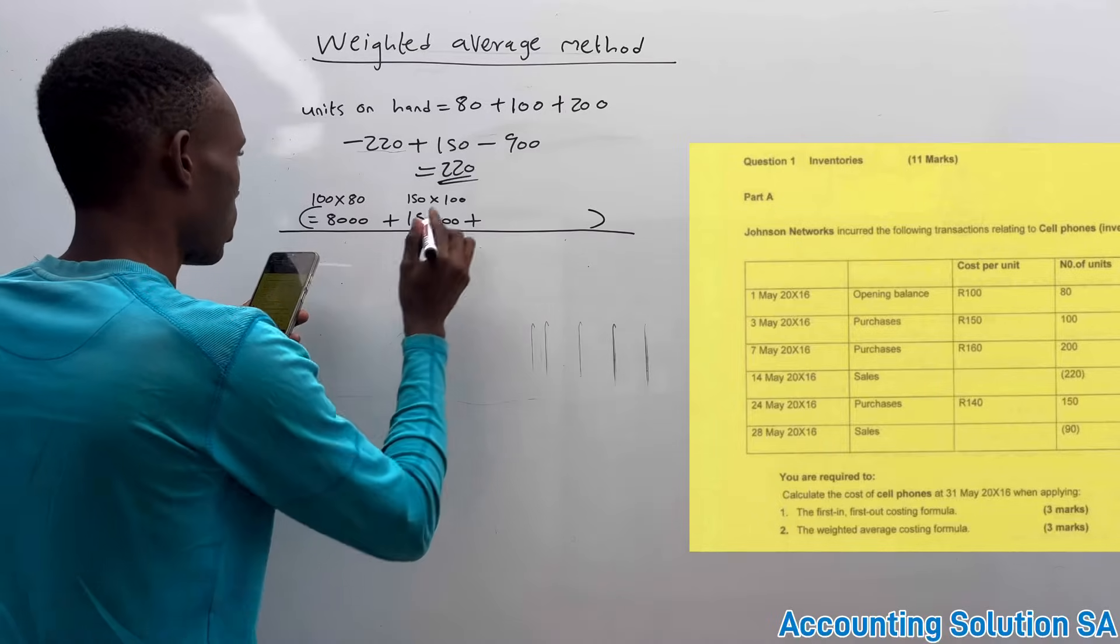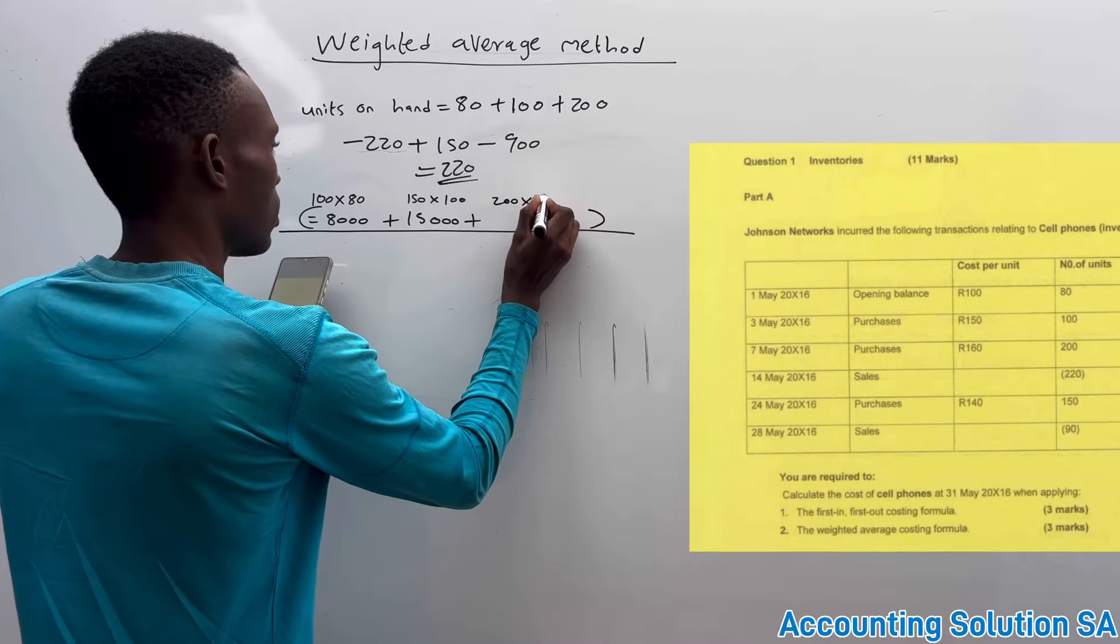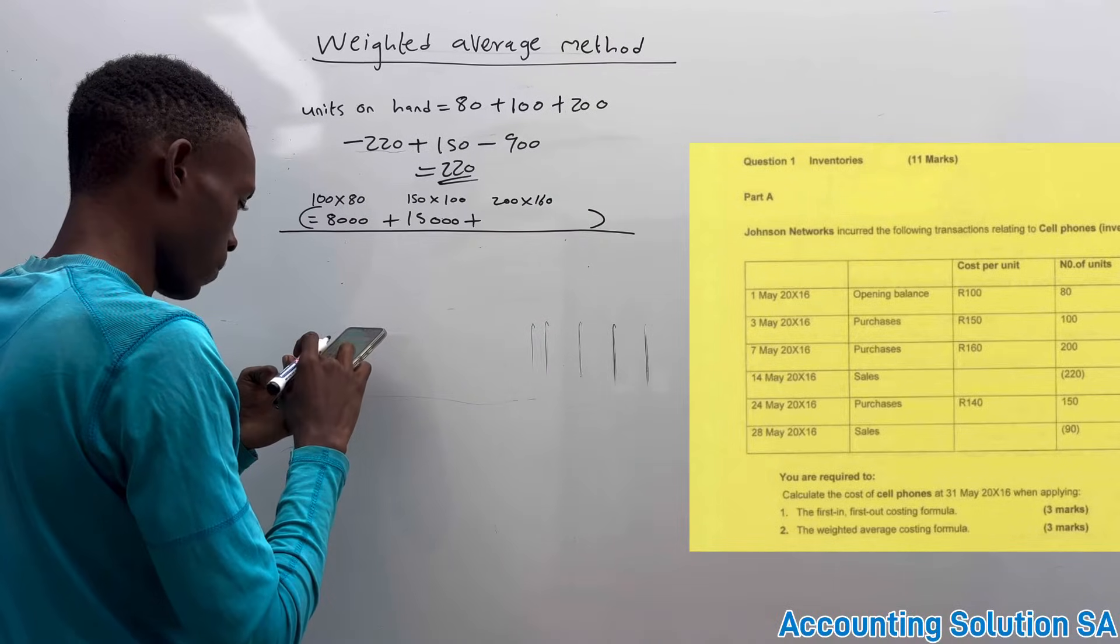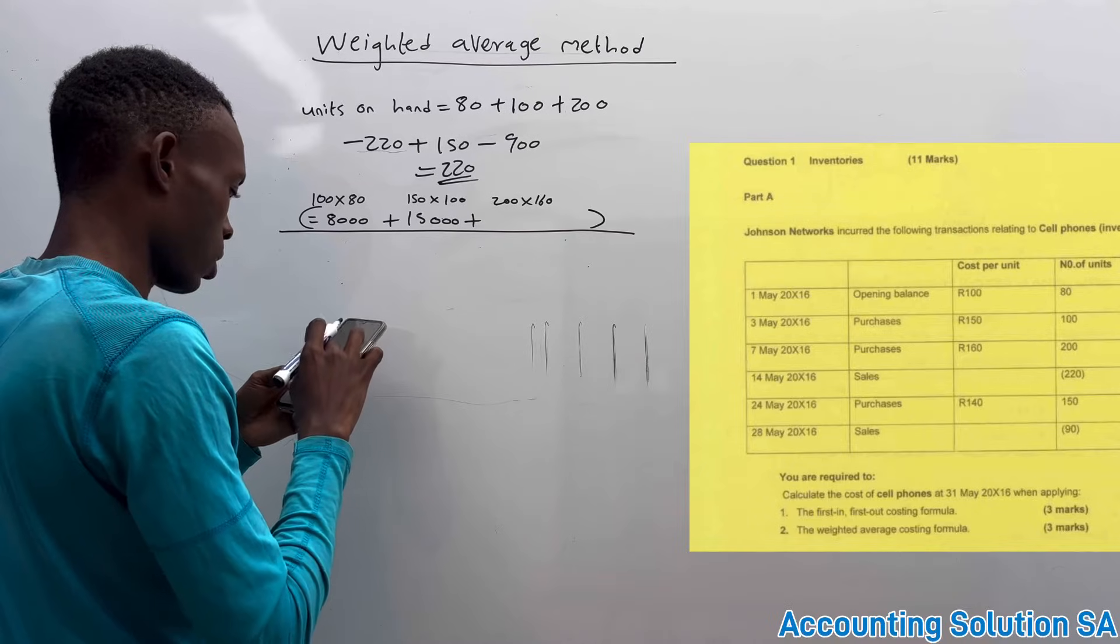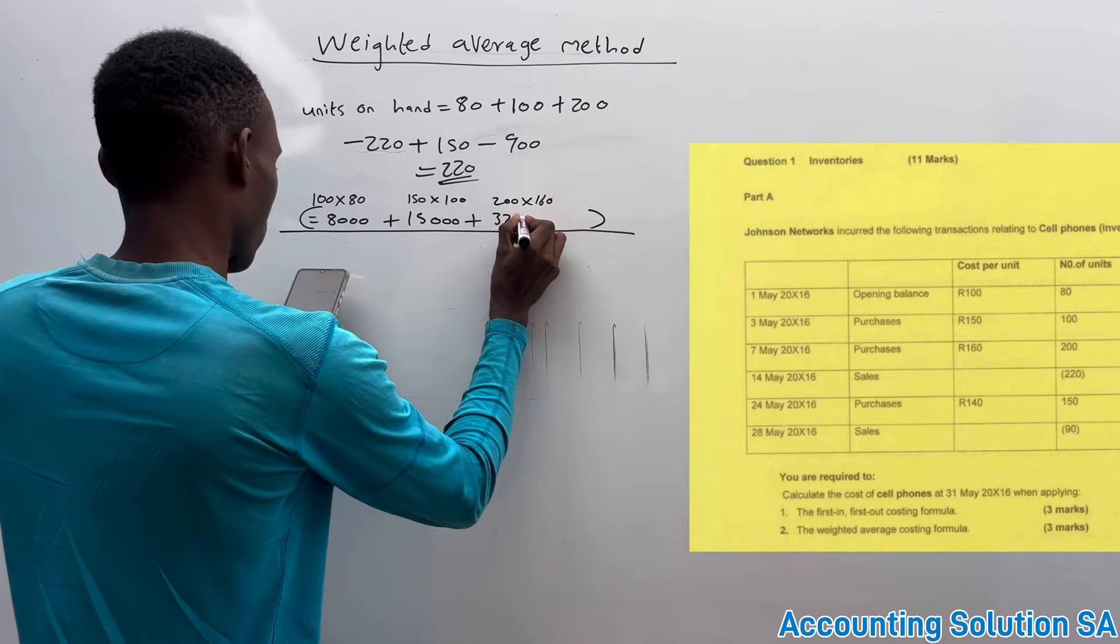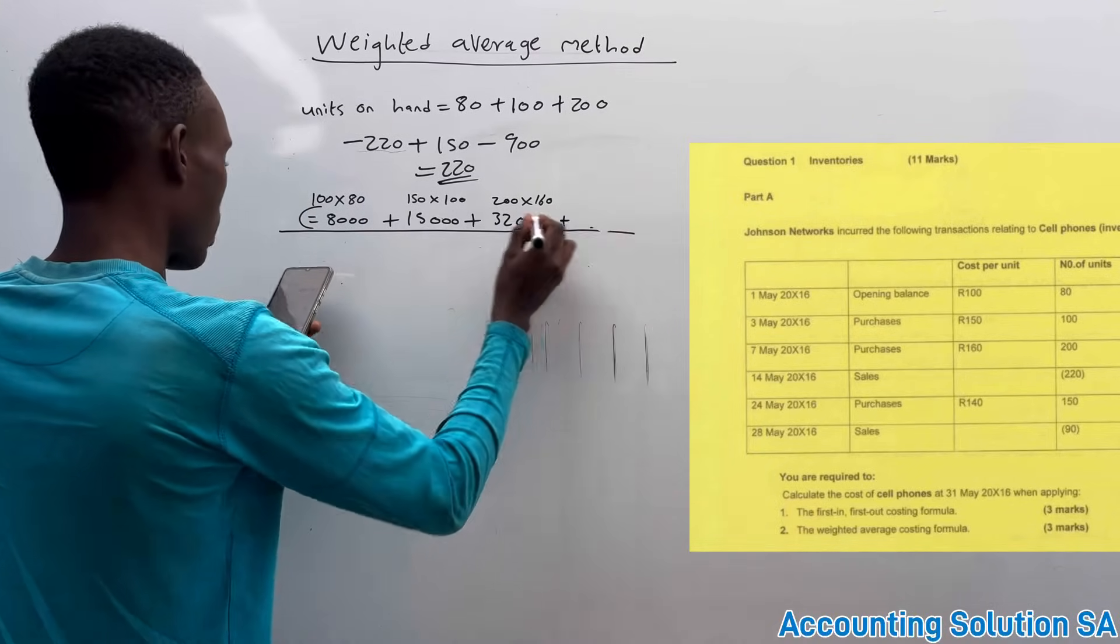It's gonna be 200. 200 multiply by 160. Let me calculate this one. 200 multiply by 160, it's gonna give us 32,000. Then another purchase...